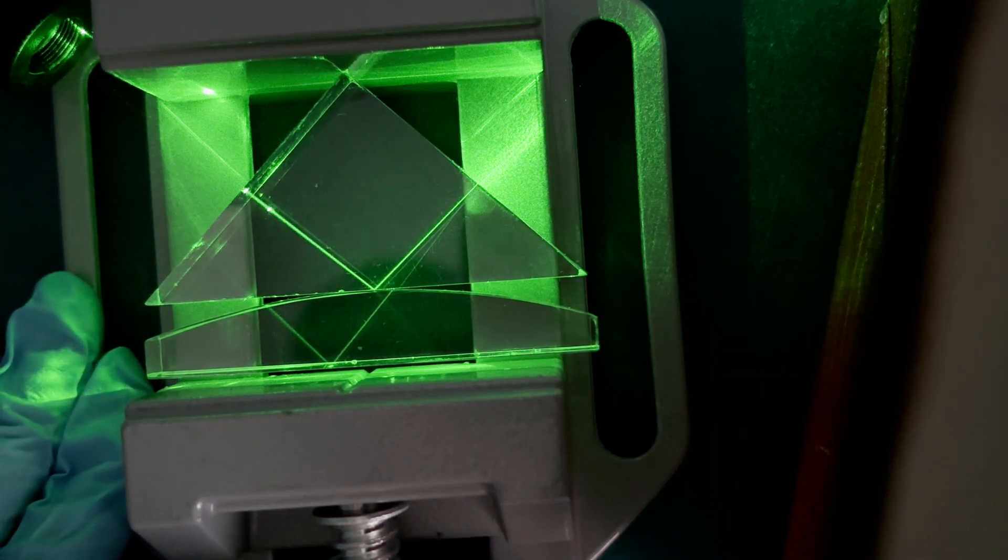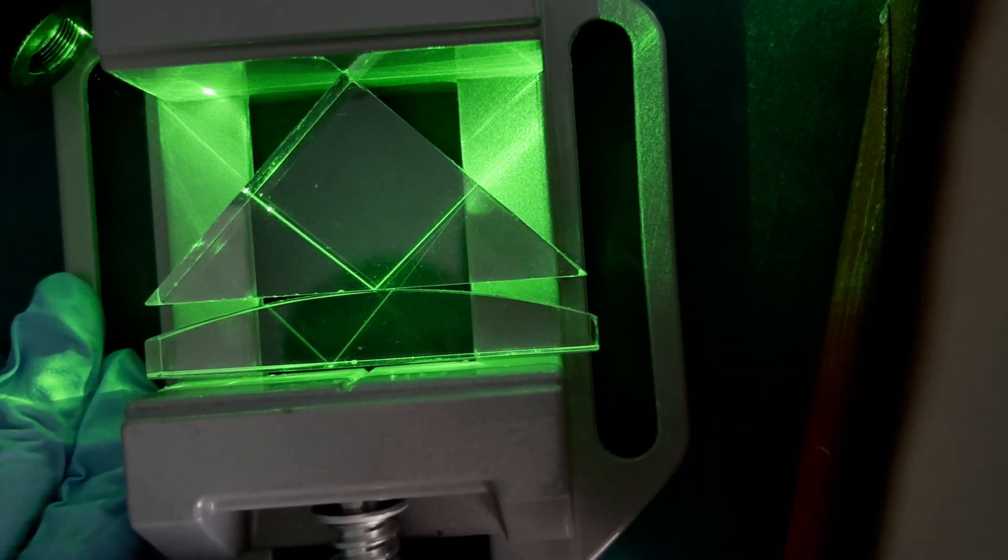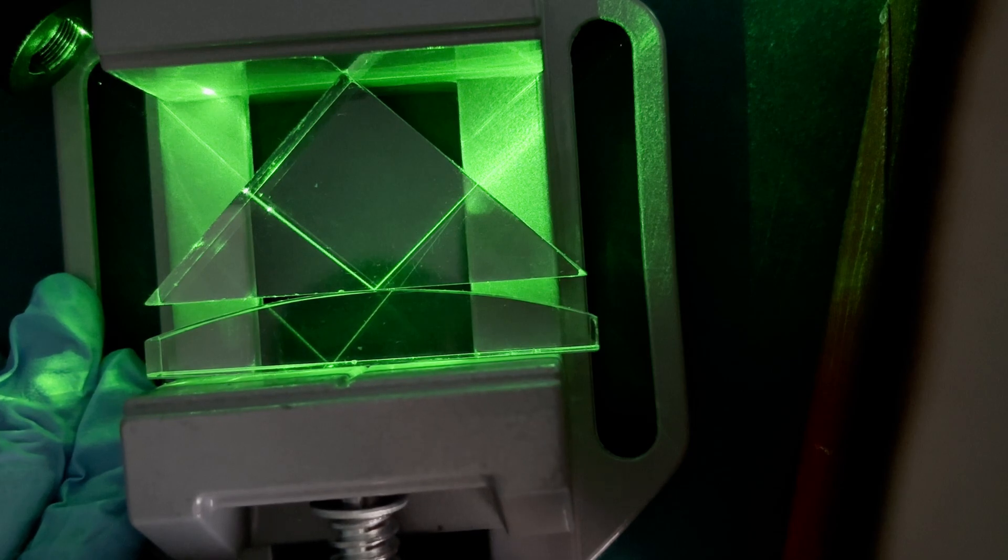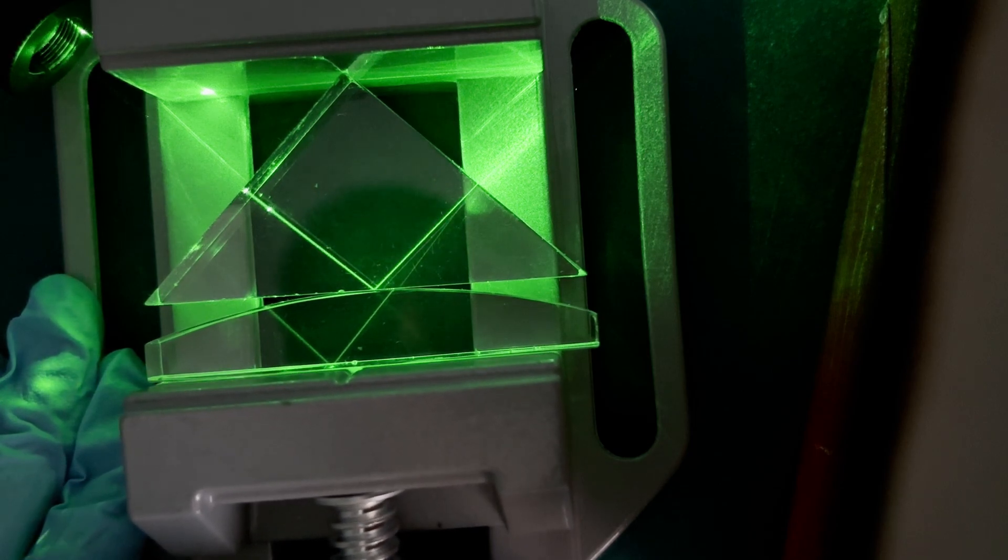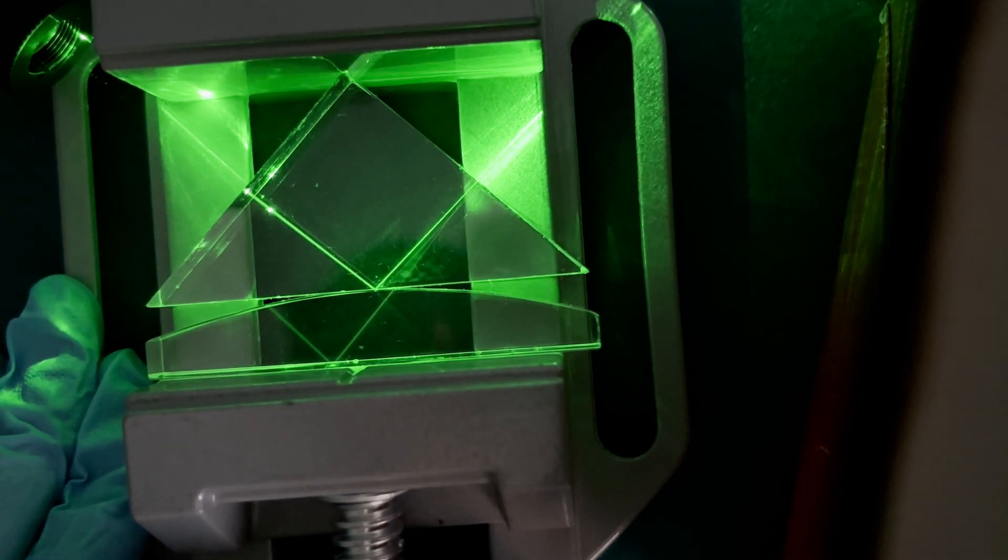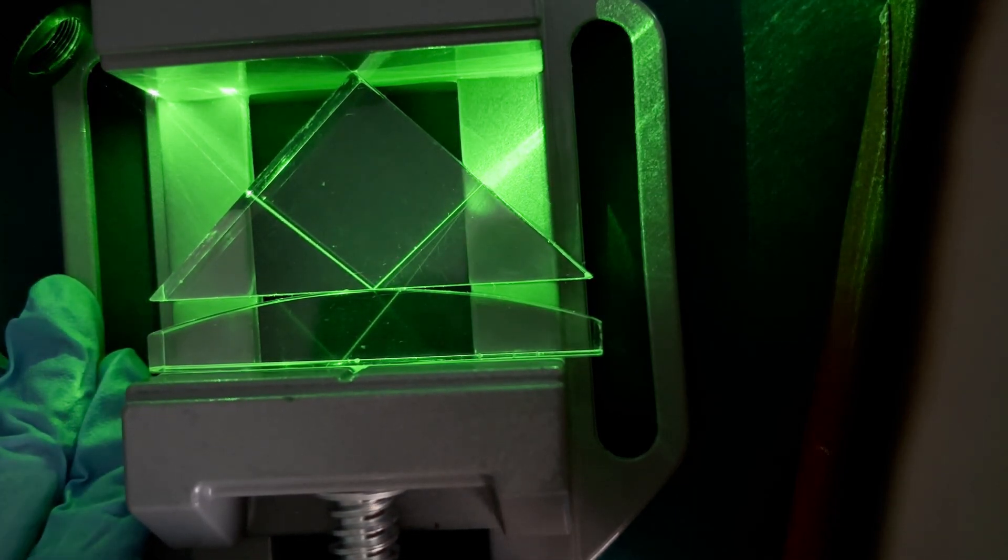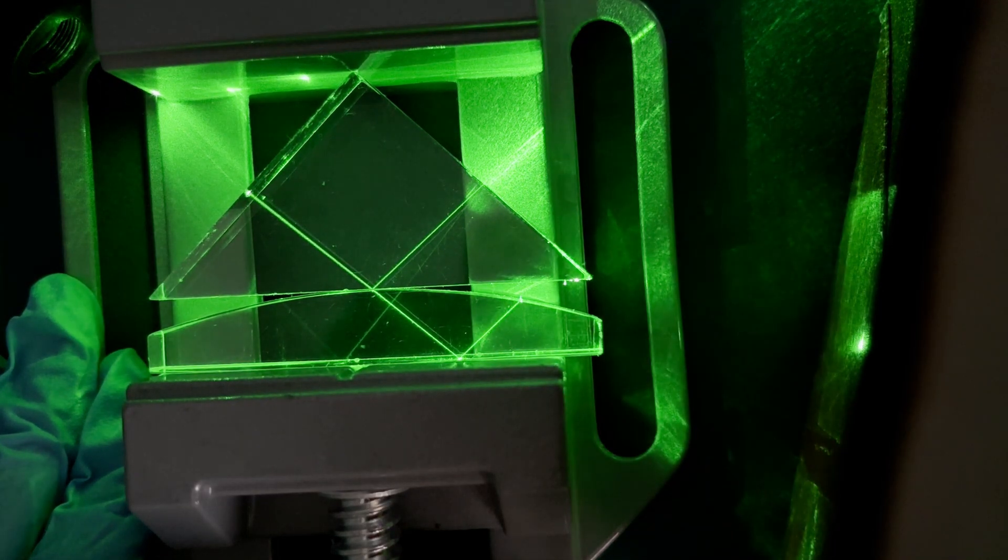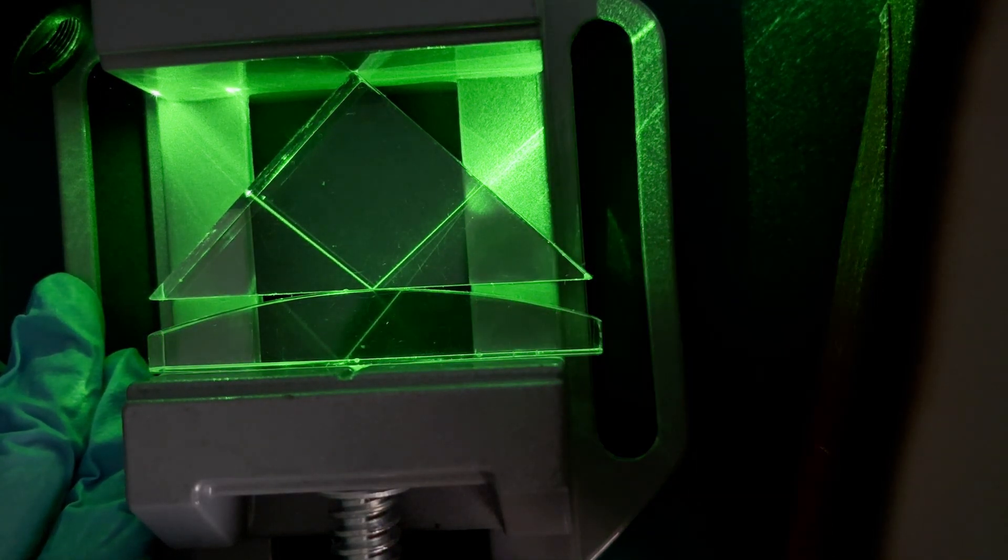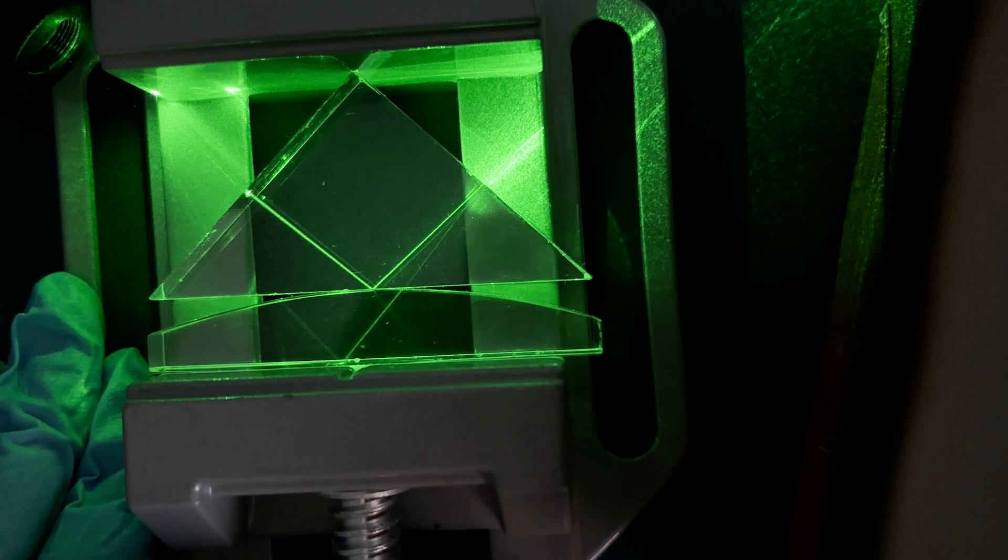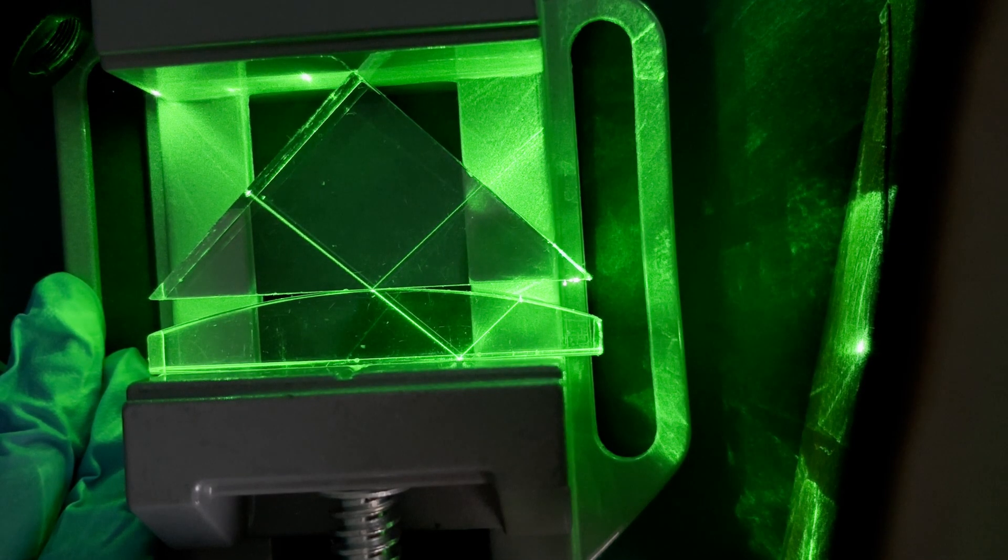But here comes the surprising part. When you introduce the acrylic lens close to the prism, something special occurs. Initially with a large gap between them, light behaves as usual. However, as you slowly squeeze the blocks together using the vise, bringing the gap down to the order of light's wavelength, a transmitted beam appears in the second medium, defying the air barrier.